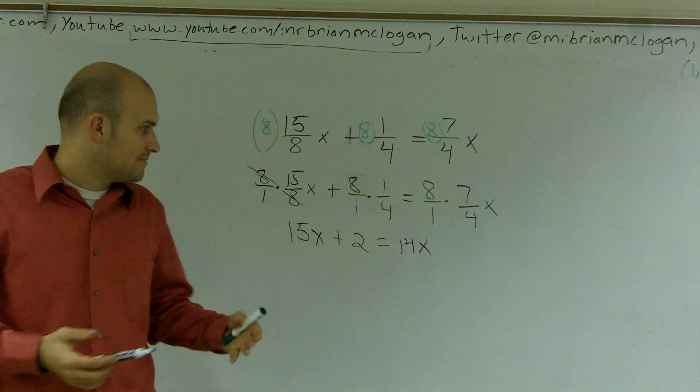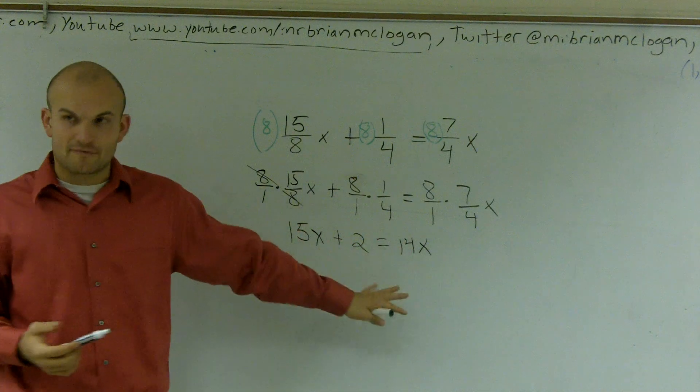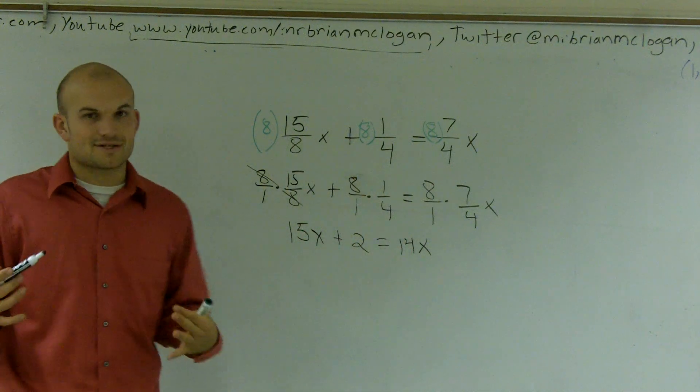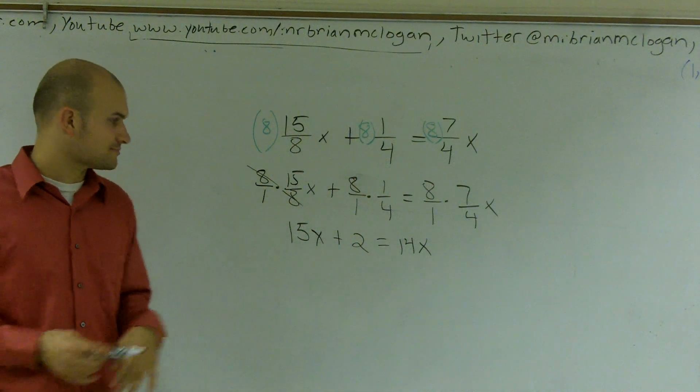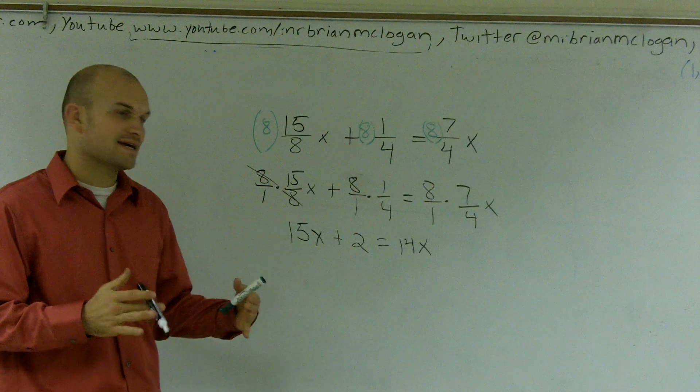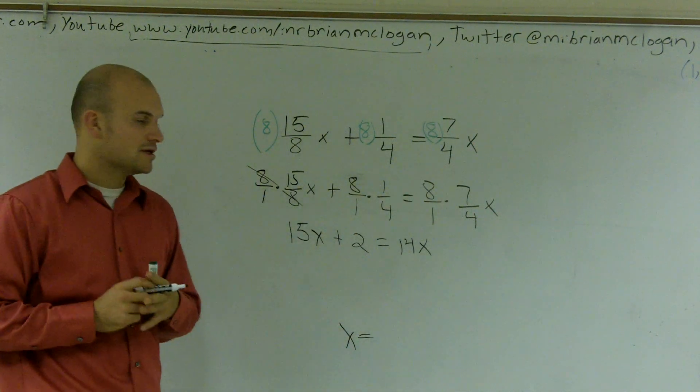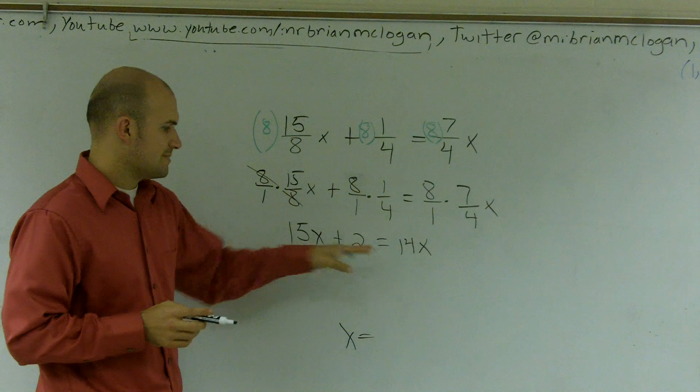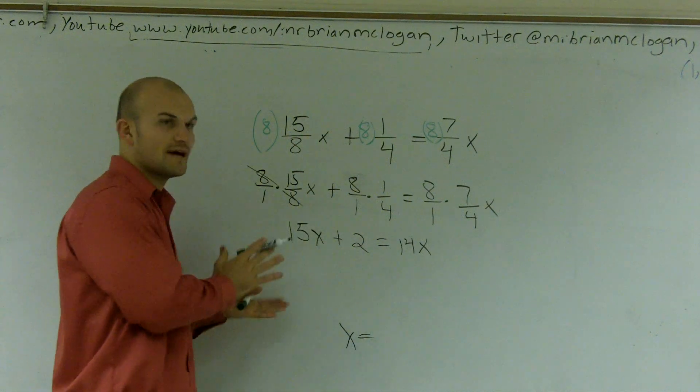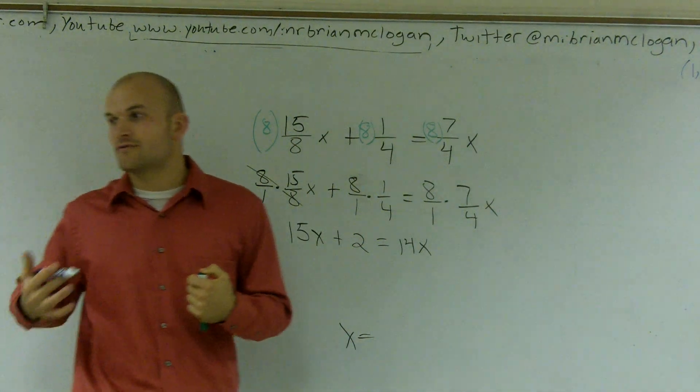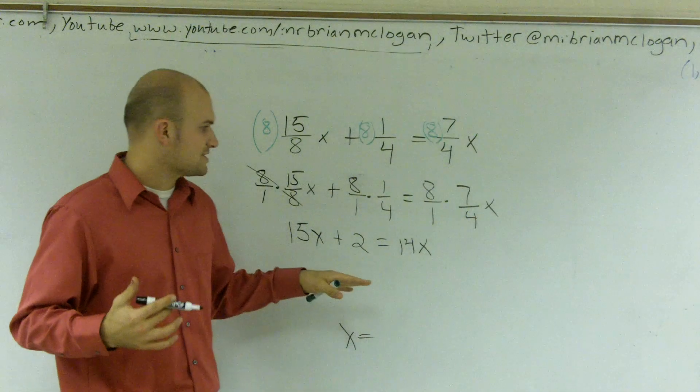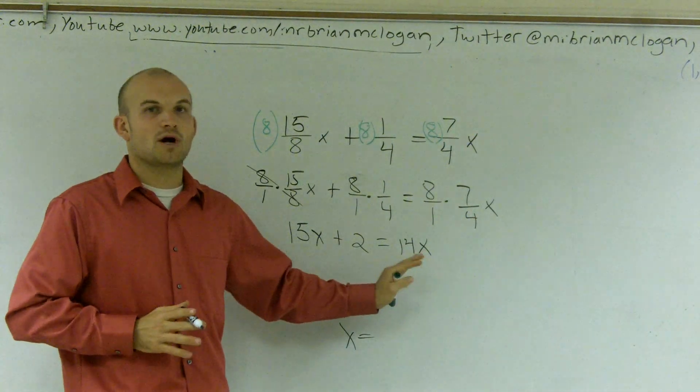So now what I'm at is now I'm at an equation. I've gotten rid of all my fractions. So I'm at a point where it's actually I can work with this. Now what I'm going to do is I need to get, remember, when you're solving for x, you want to get x by itself. So what I'm going to have to do is get my x's on one side. You can either choose the left or the right side, but typically a good rule of thumb is to get rid of your smallest variable.